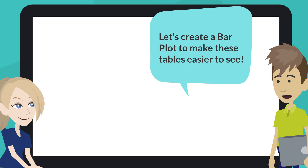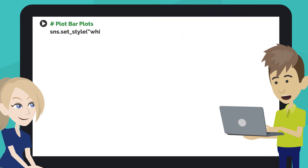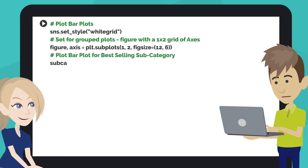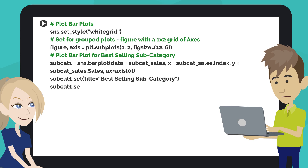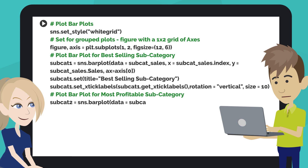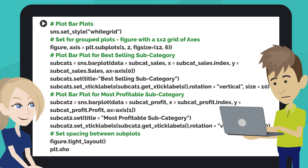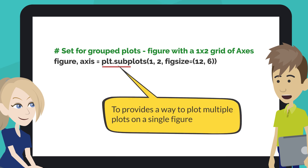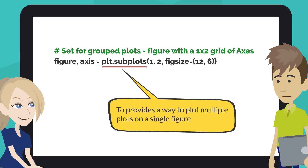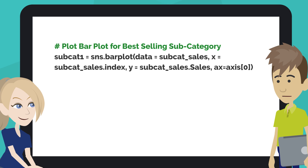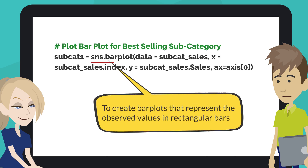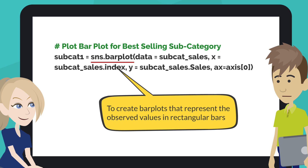Let's create a bar plot to make these tables easier to see. Type the code like this into the next code cell of your notebook. The matplotlib.pyplot.subplots method provides a way to plot multiple plots on a single figure. This code generates a figure with one row and two columns of subplots. This code creates a bar plot for the best-selling subcategory. The seaborn barplot function creates bar plots that represent the observed values in rectangular bars.